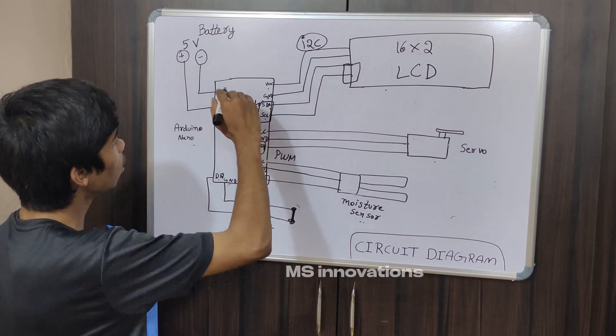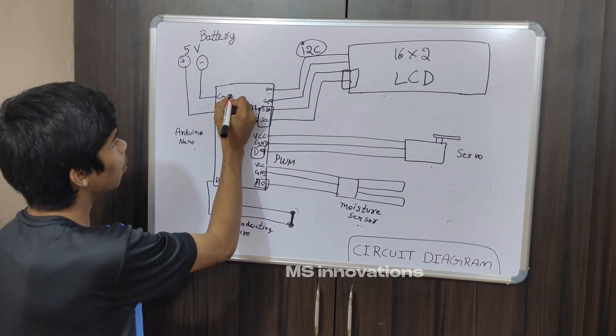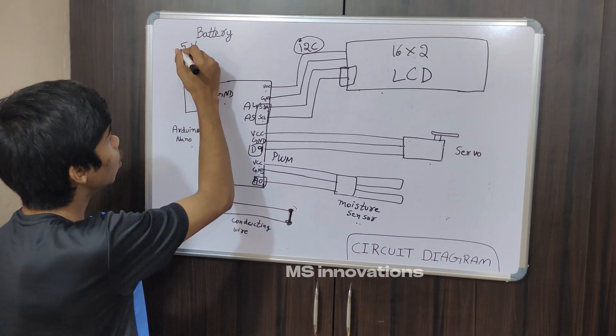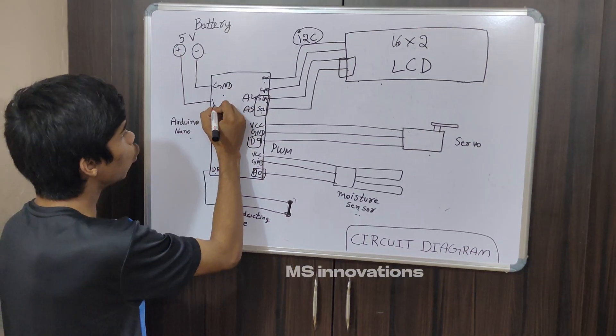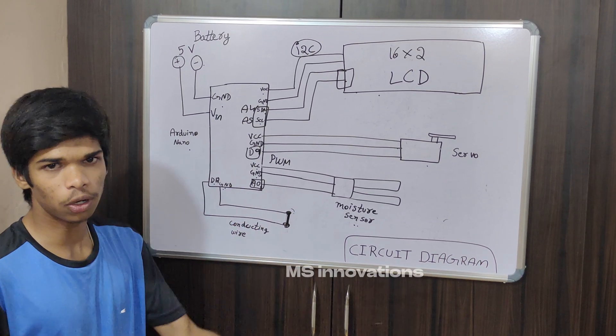The whole thing we can power using a battery. Normal negative of the battery will go to the GND of Arduino and positive of the battery will go into the VIN pin of the Arduino. This is a simple circuit diagram of our project.